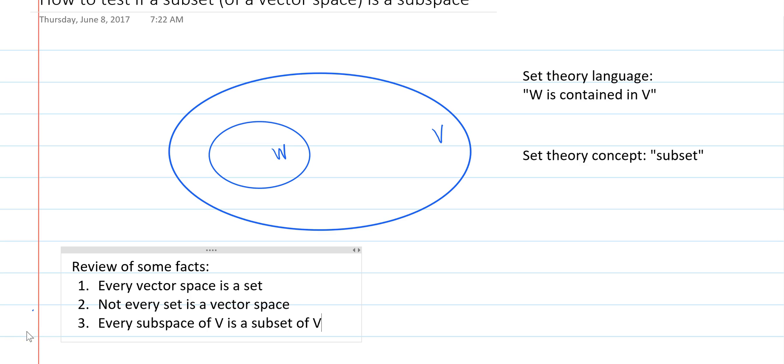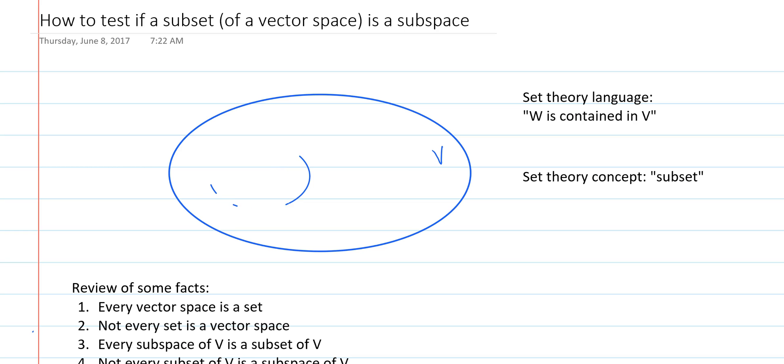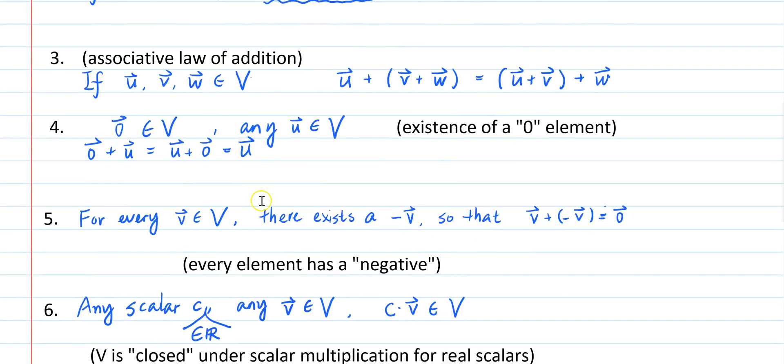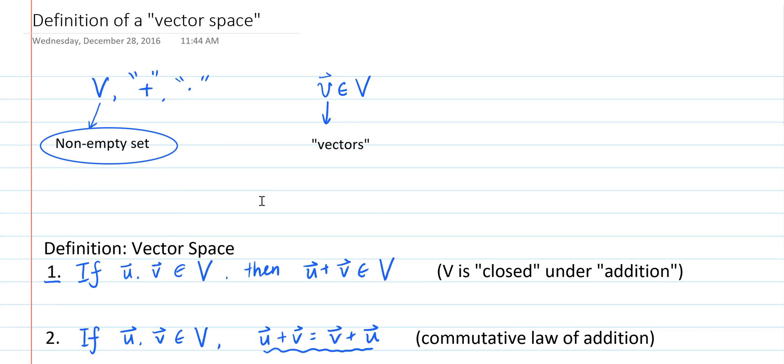So every subspace of V is a subset of V to begin with, but not all subsets of V are subspaces of V. So if you are given a specific subset, let's still call it W, of V, how do you know if W is a subspace of V? If you directly use the definition, then you have to go through ten axioms to verify whether W is a vector space.